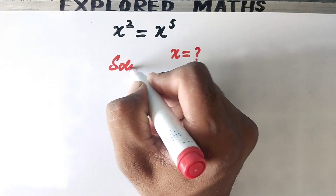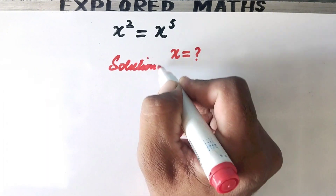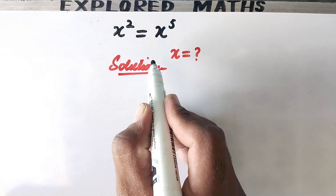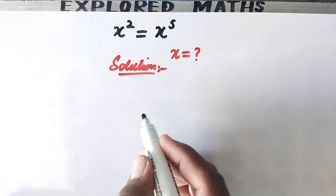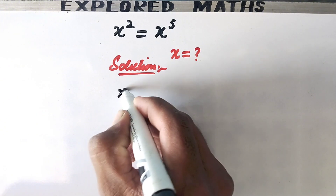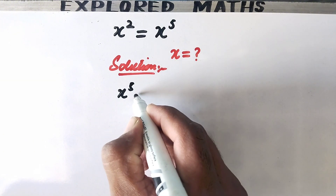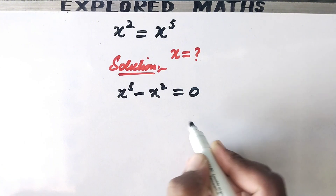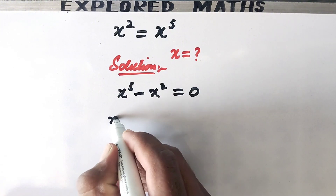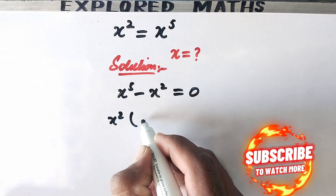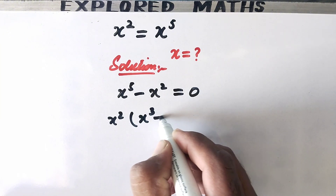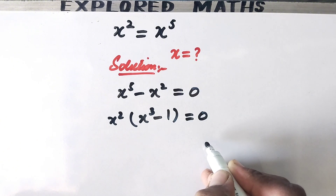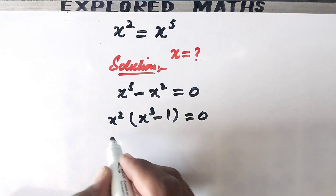In the first step we will write it in this way, taking this value to the right hand side. It will be x to the power 5 minus x squared equal to 0. Then taking x squared common, the left side will be x cubed minus 1 equals 0.